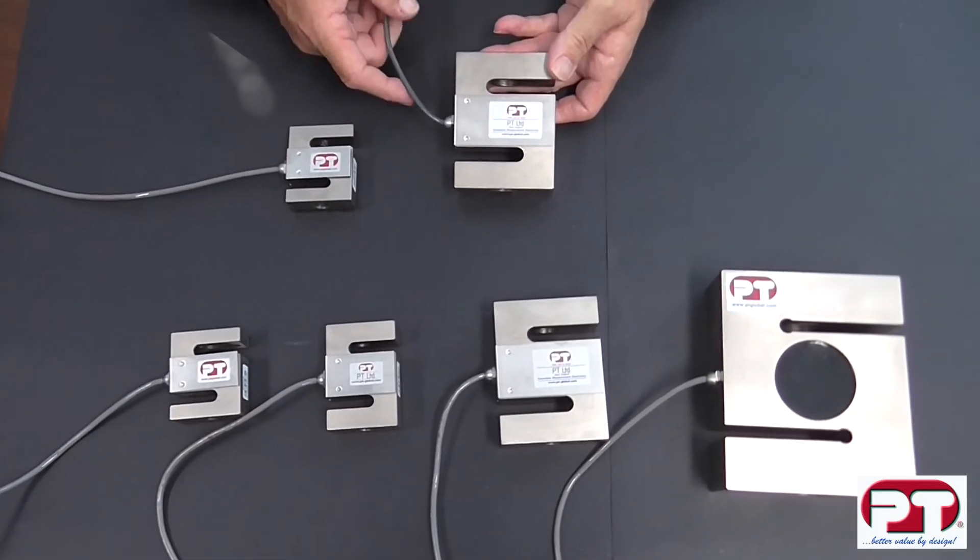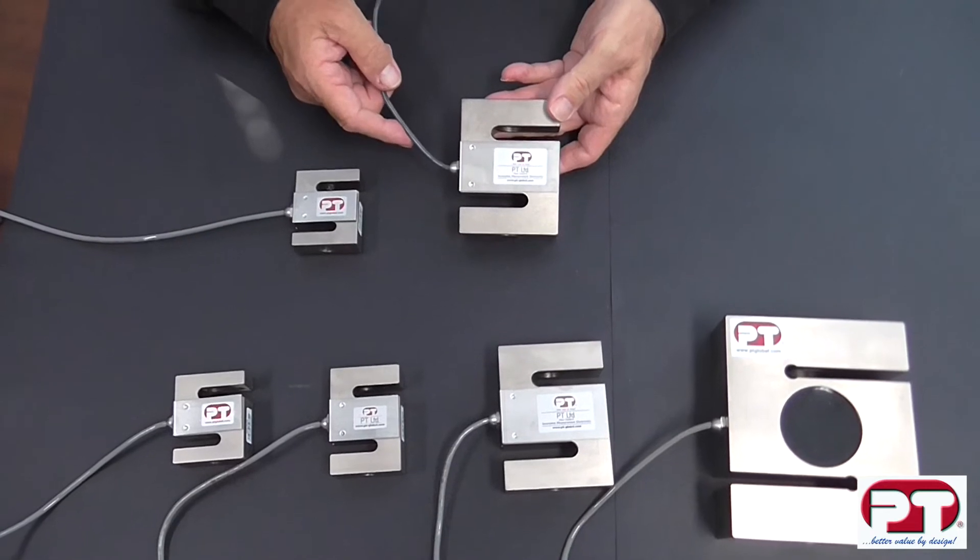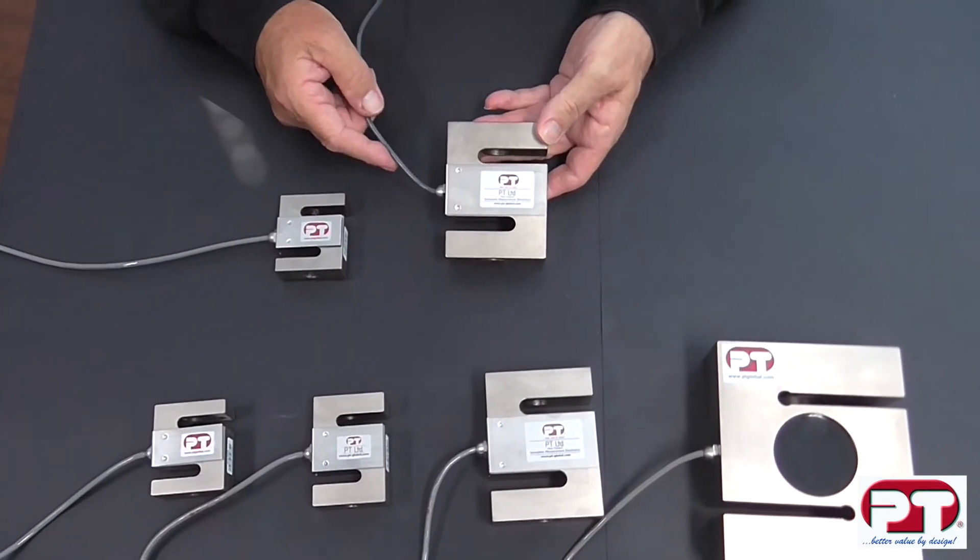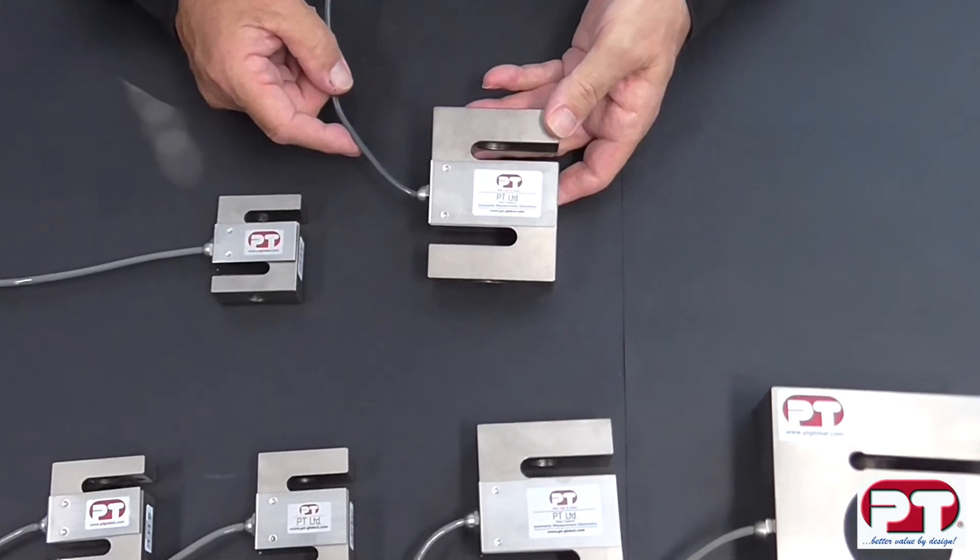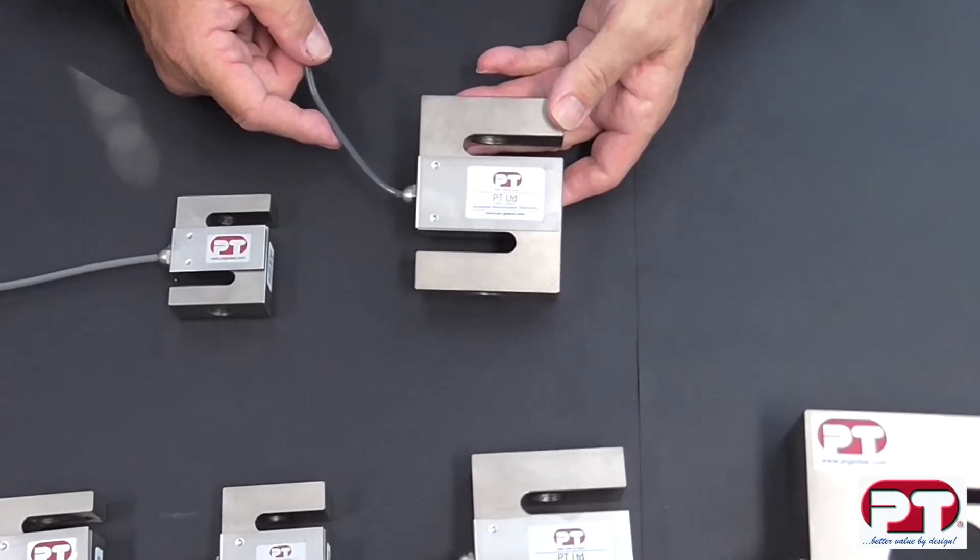PT-4000 material is tool steel, which is electroless nickel plated for lifelong protection. Its features include 3 millivolt output for better sensitivity in the lower range.